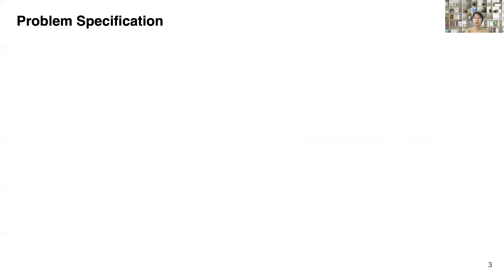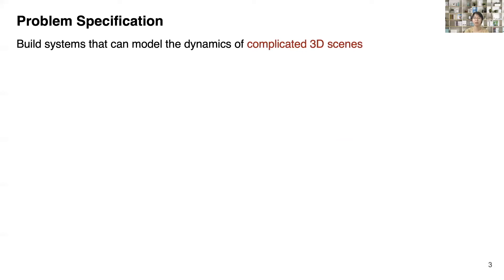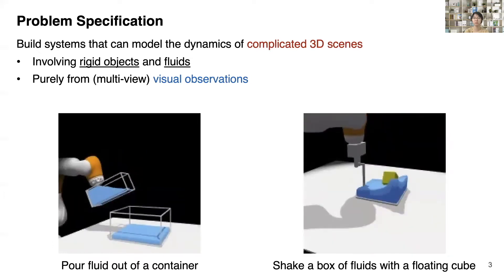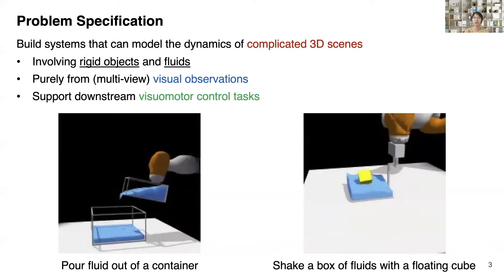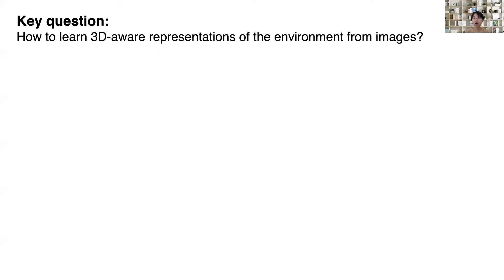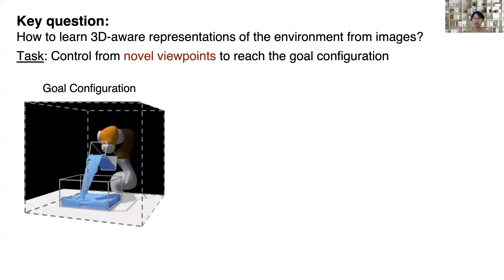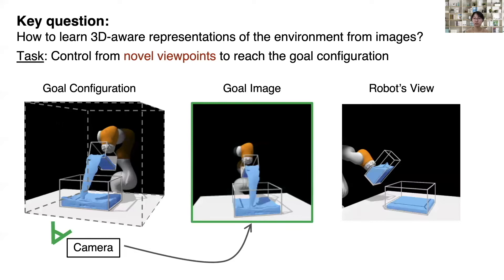In this work, we aim to build systems that can model the dynamics of complicated 3D things that might involve both rigid objects and fluids. We aim at learning the dynamics model purely from visual observations to support downstream visual motor control tasks. A key question is how to learn a 3D-aware representation of the environment from images that accurately depicts the underlying content and allows control tasks from novel viewpoints. For example, given a goal image generated under certain camera viewpoints, the robot needs to achieve the same goal while its observed images differ from the goal image.